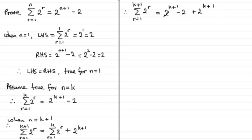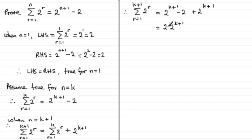At this point I like to look at what I'm expecting to get as an answer. When n equals k plus 1, I would hope to get 2 to the power k plus 2 minus 2. I can see I can achieve that if I group together the two occurrences of 2 to the power k plus 1, giving 2 times 2 to the power k plus 1, and then the minus 2.